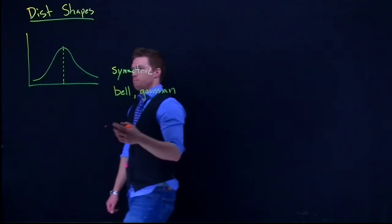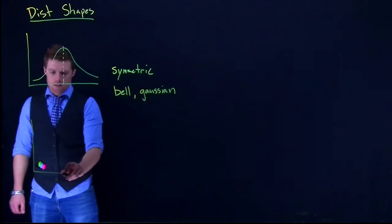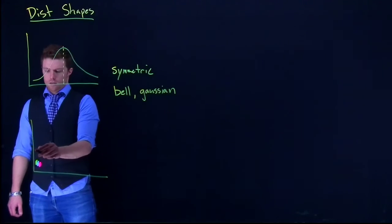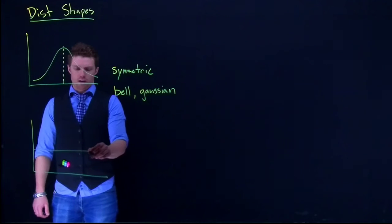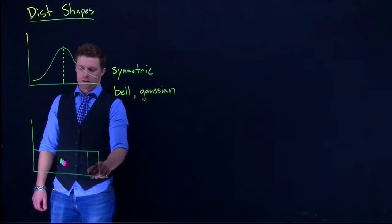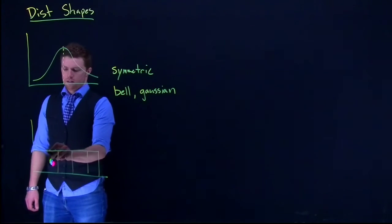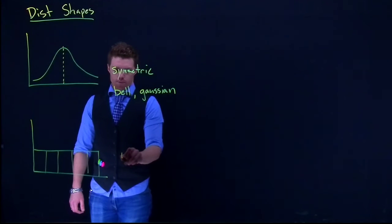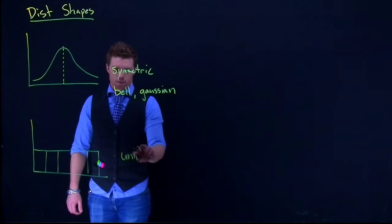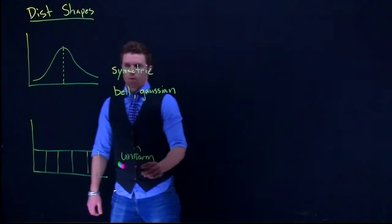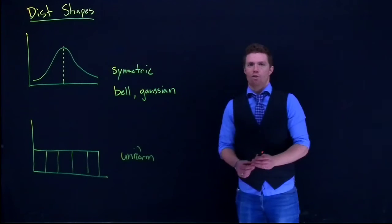Okay, and another basic one that we see a lot is called uniform. If our histograms come out and it looks like something like this, this is called uniform, where it's basically the same all the way across.